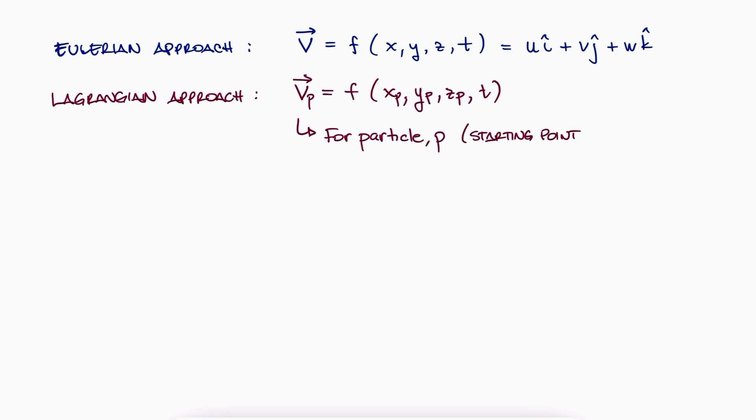Alright, so for the Eulerian flow field, we have v as a function of x, y, z, and t. That'll tell us what the velocity is for a given position in time. And for the Lagrangian flow field, we have v as a function of xp, yp, zp, and t. That tells us the velocity of the p particle that started at location xp, yp, and zp for a given time value t.